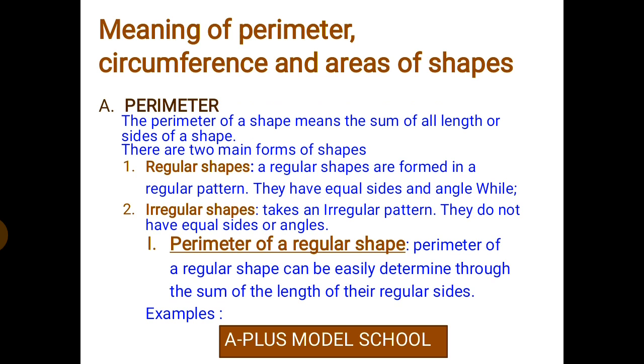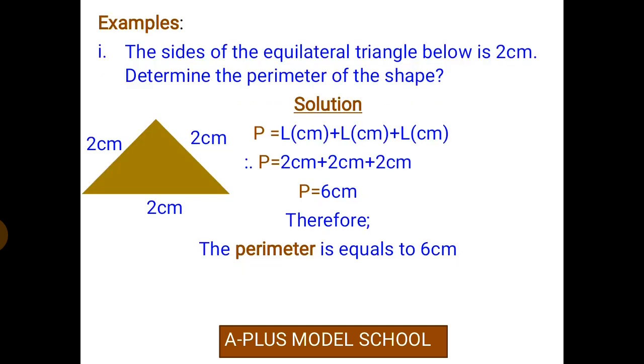Examples. The sides of the equilateral triangle below is 2 cm. Determine the perimeter of the shape. According to the diagram, we see that it is an equilateral triangle. An equilateral triangle has equal sides.